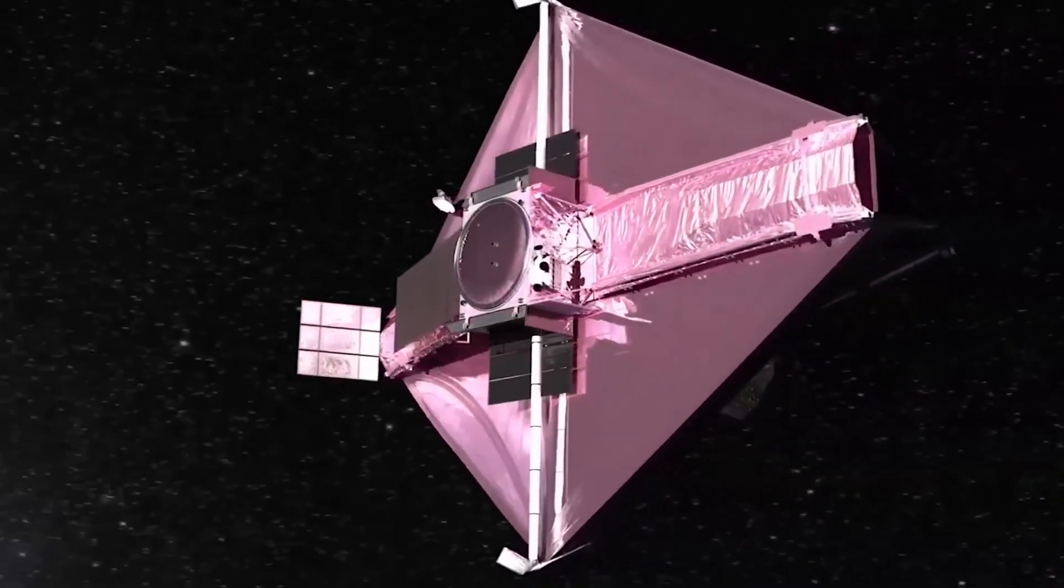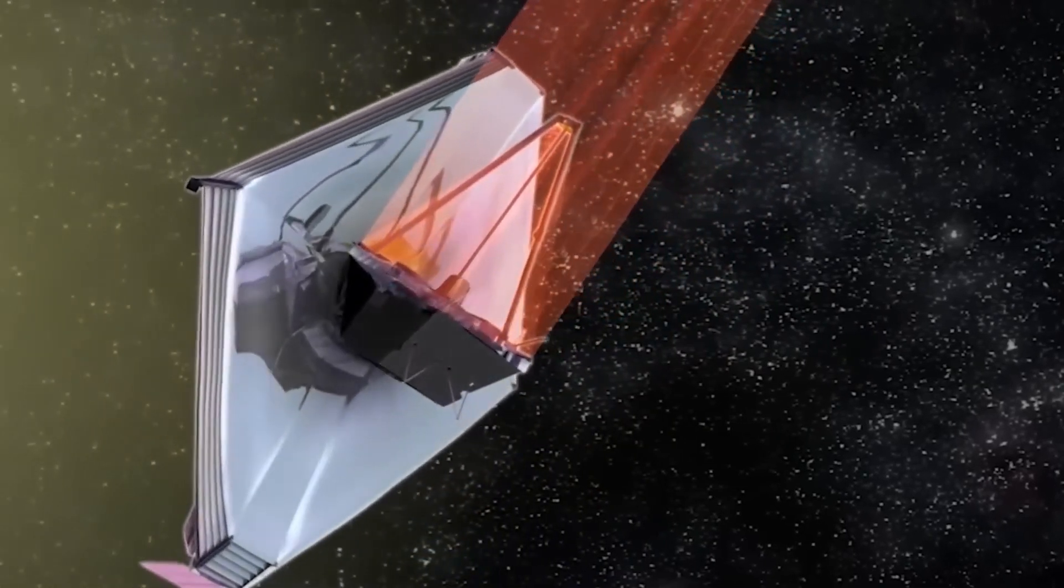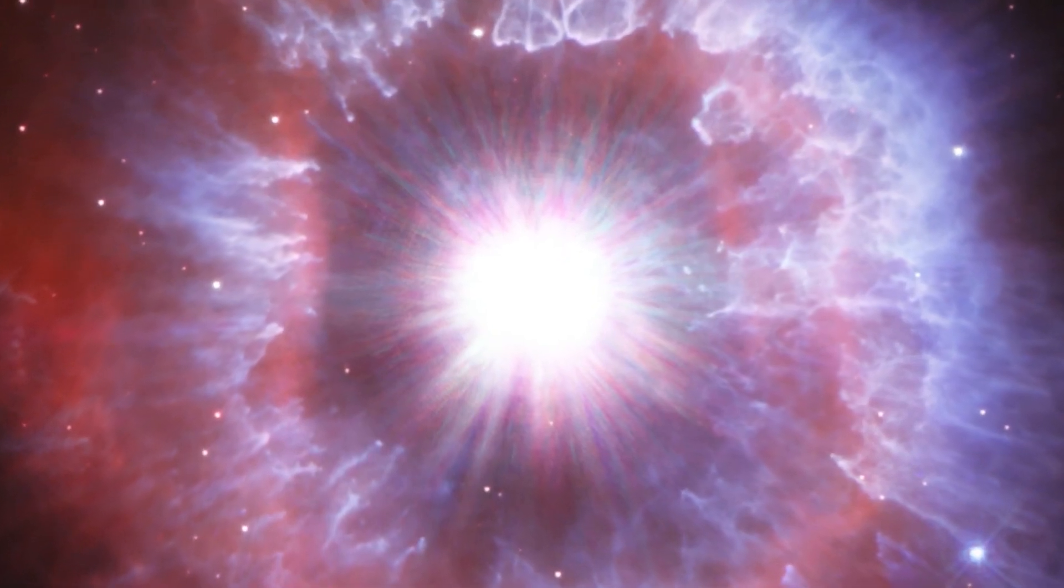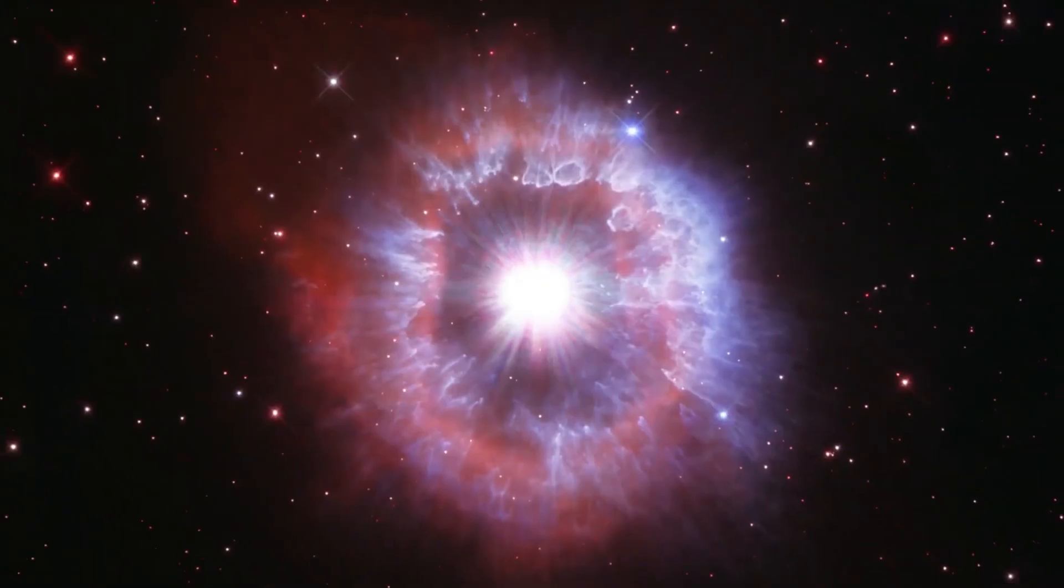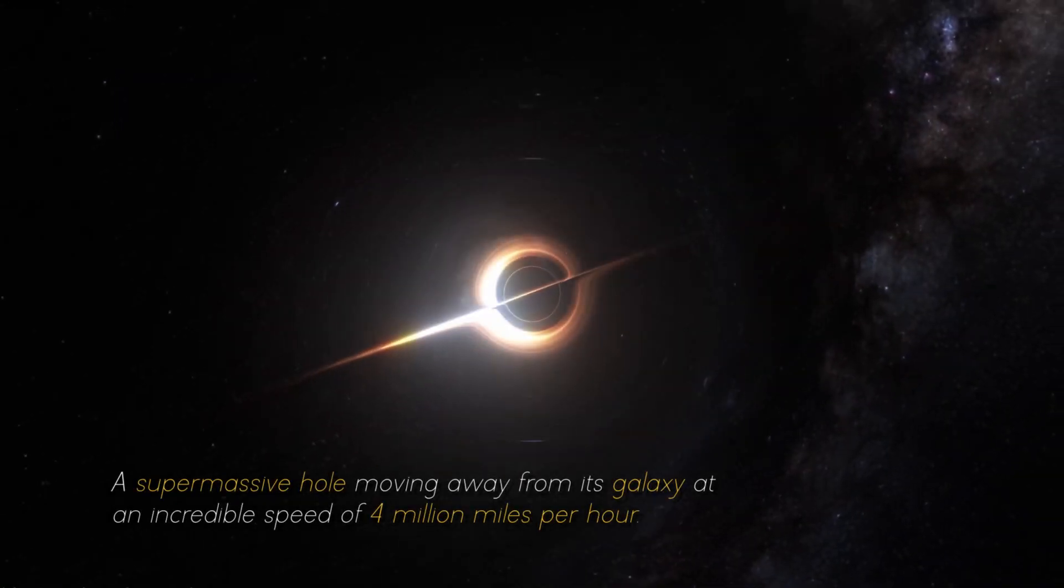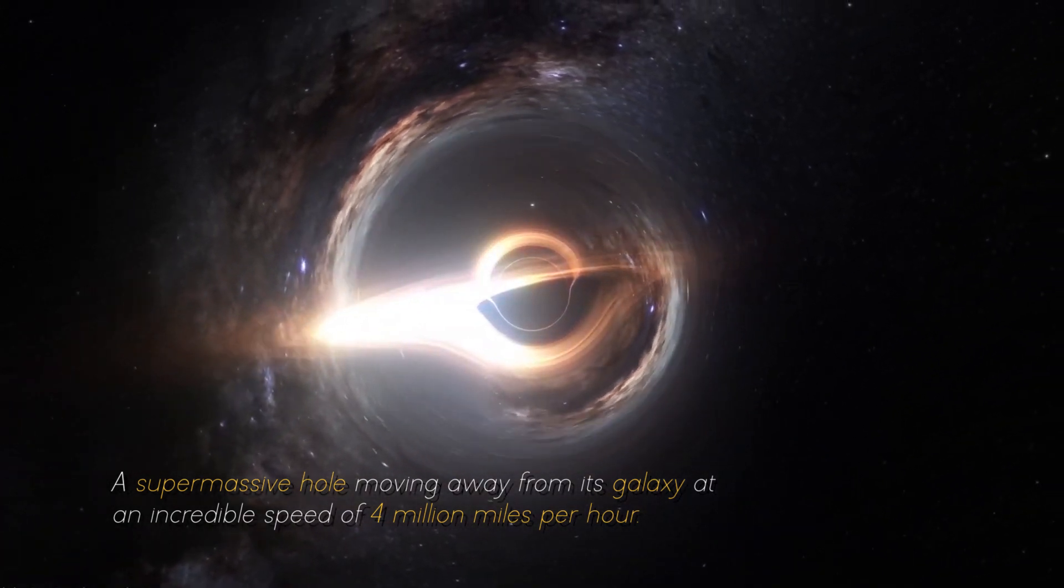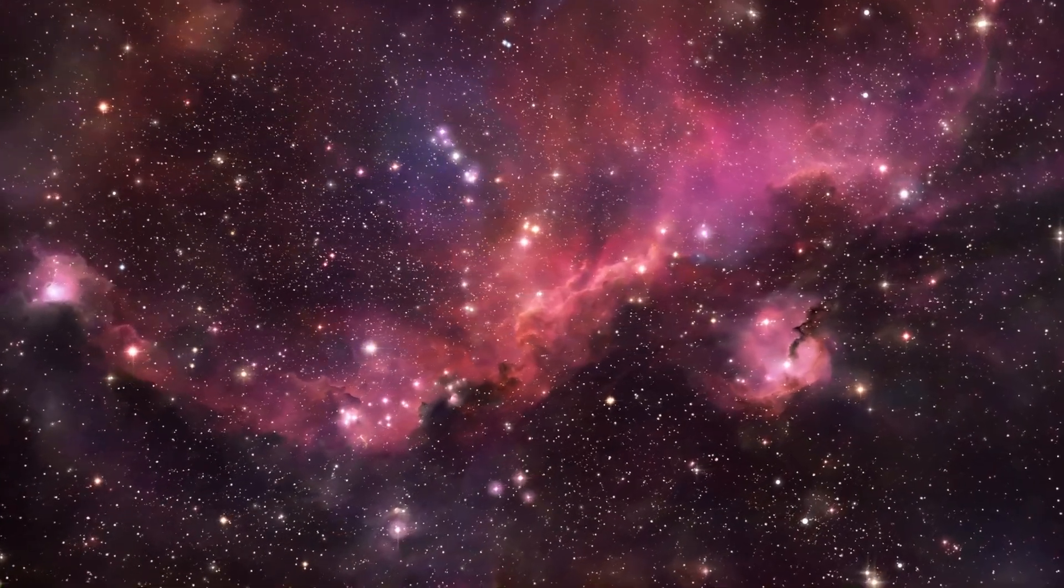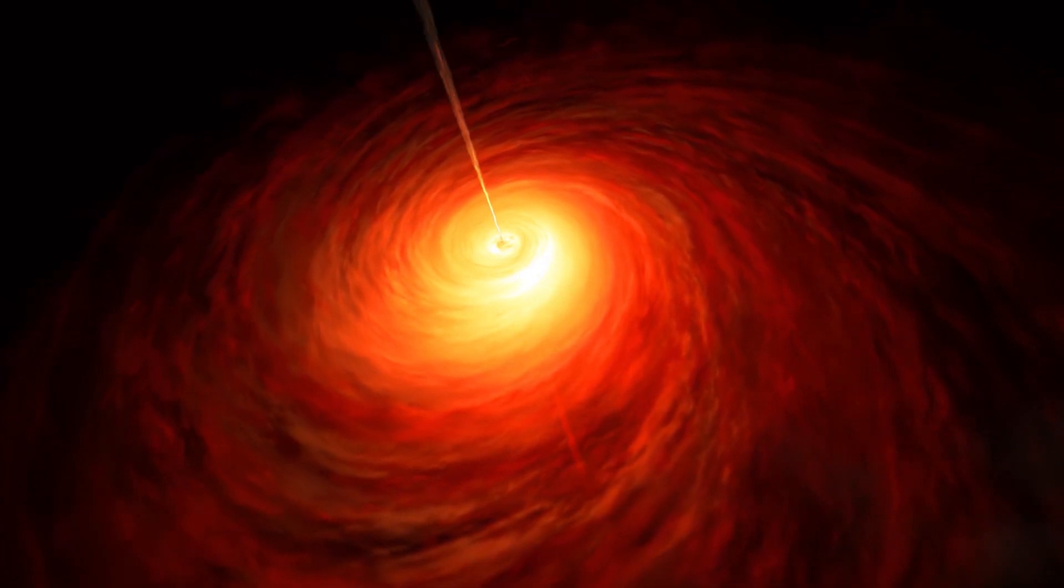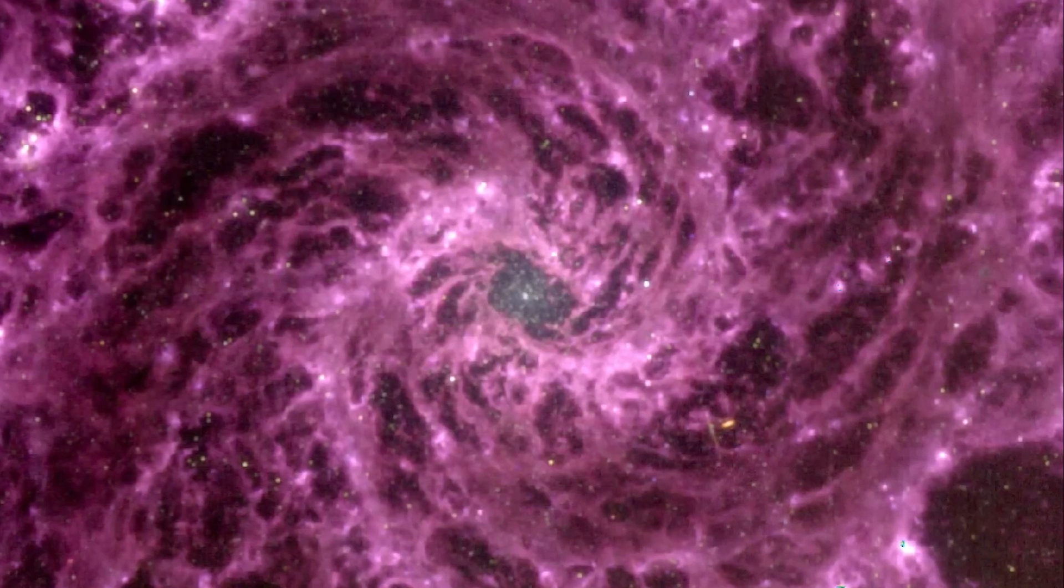In a surprising turn of events, NASA's James Webb Space Telescope has made a discovery that has astronomers around the world in awe. A few weeks ago, the telescope discovered the earliest known galaxy in the universe, but it now has detected something even more massive: a supermassive hole moving away from its galaxy at an incredible speed of 4 million miles per hour. This latest discovery has very important implications and has generated much speculation among scientists and space enthusiasts about what it means for our understanding of the cosmos.